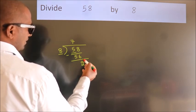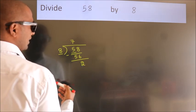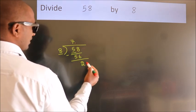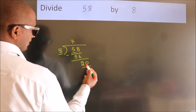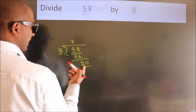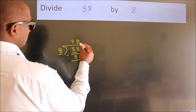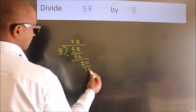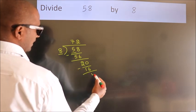After this, no more numbers to bring it down. So what we do is, we put dot, take 0. So 20. A number close to 20 in 8 table is 8 times 2, 16. Now we subtract, we get 4.